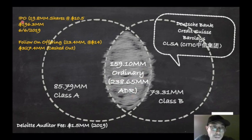They did their initial public offering back in June of 2019 for 19.8 million shares at $10.50. Overall, net proceeds to the company was $196 million. Their follow-on offering took place a few months later at $14 a share. And then on their secondary, they sold 23 million shares, which is more than their IPO. And the proceeds was $327 million. And every single dollar of the proceeds went to existing shareholders cashing out. And none of it actually went to the company.